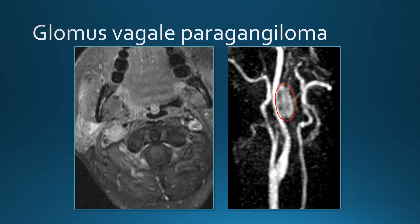Paragangliomas are named by location: in the jugular foramen it's a glomus jugulare; just below the skull base it's a glomus vagali; at the carotid bifurcation it's a carotid body tumor. We distinguish a schwannoma from a paraganglioma by the fact that the paraganglioma is a hypervascular tumor — it enhances during the arterial phase of an MR angiogram, CT angiogram, or conventional angiogram — whereas the schwannoma enhances more slowly and will not enhance during the arterial phase.